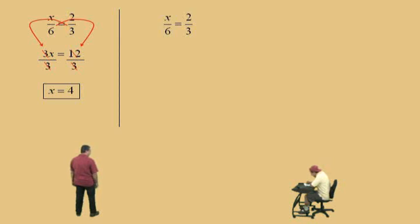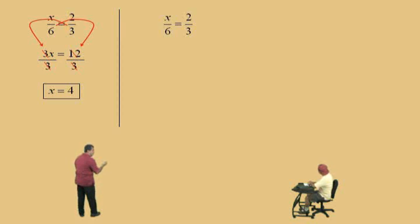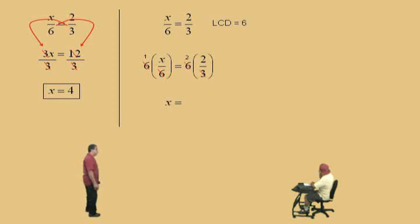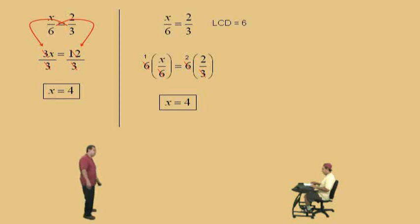Let's do another one. Now, notice here, Charlie, it's the same problem, but we're going to use a different technique. We're going to go back to the clearing fraction technique using the LCD. Our LCD is 6. And if we multiply both sides by 6, notice the 6's cancel — that gives us 1x. And on the right-hand side, 3 goes into 6 two times — 2 times 2 is 4. There is the same answer. So you can do it either way you want. A lot of people like to cross multiply instead of using the clearing fraction technique when you have a proportion problem. But clearing fractions always works, even on these proportion problems.